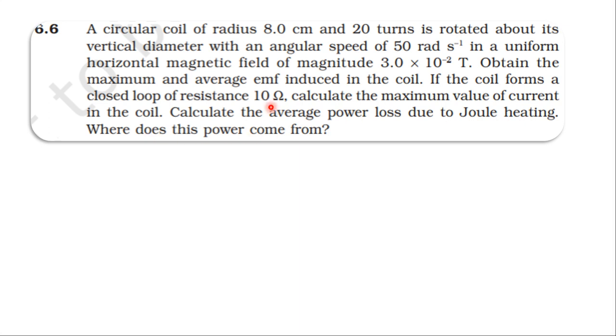Given: circular coil radius 8 centimeter, number of turns 20, omega is 50, B is 3 into 10 power minus 2 tesla.